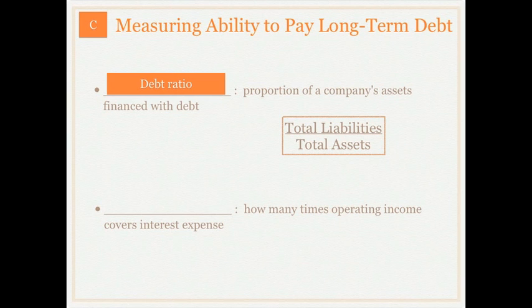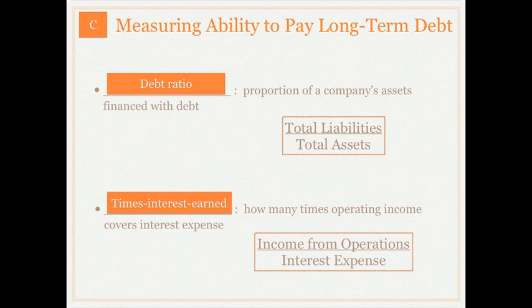The second ratio to measure the ability to pay long-term debt is the times interest earned ratio. This ratio will tell us how many times the operating income can cover their current interest expense, so are they able to pay off the interest on their current debt as it comes due. We're going to take our income from operations and divide that by interest expense.